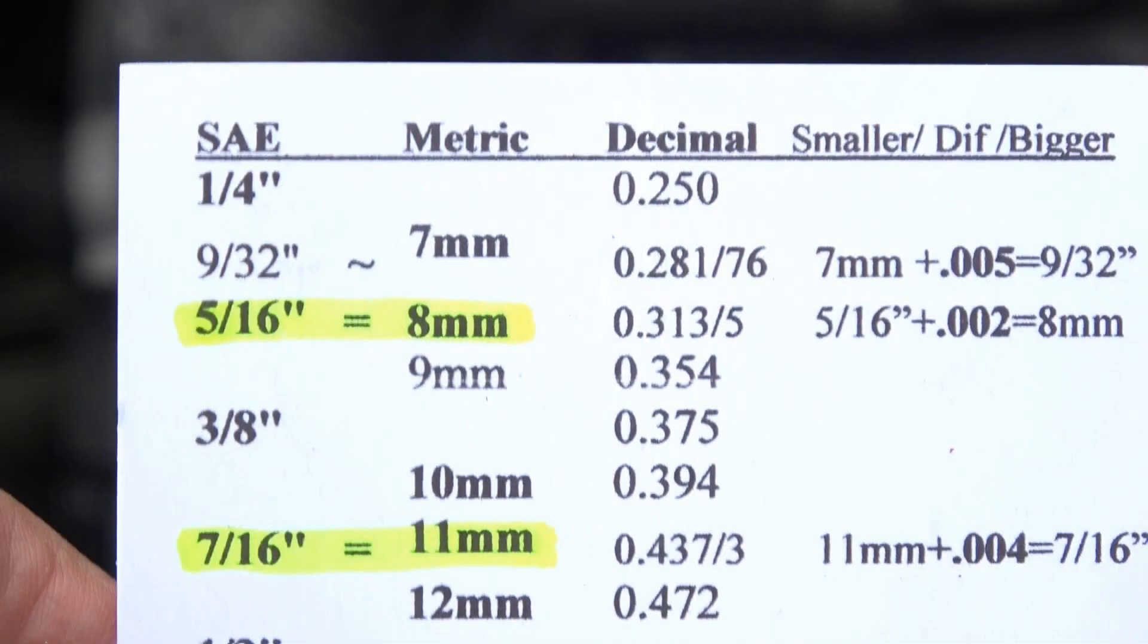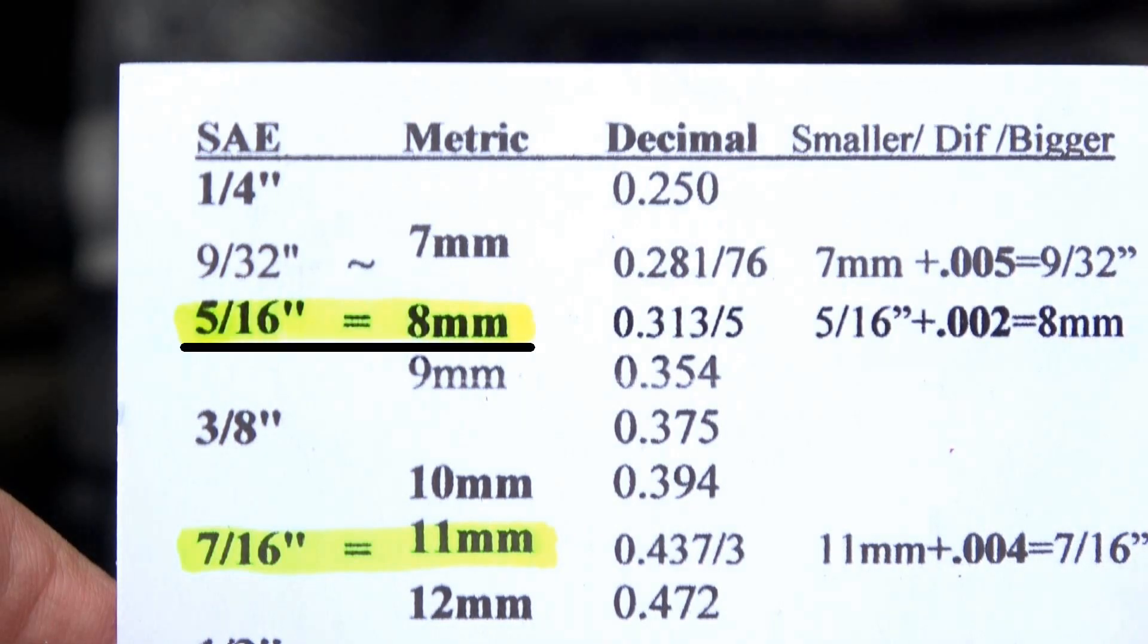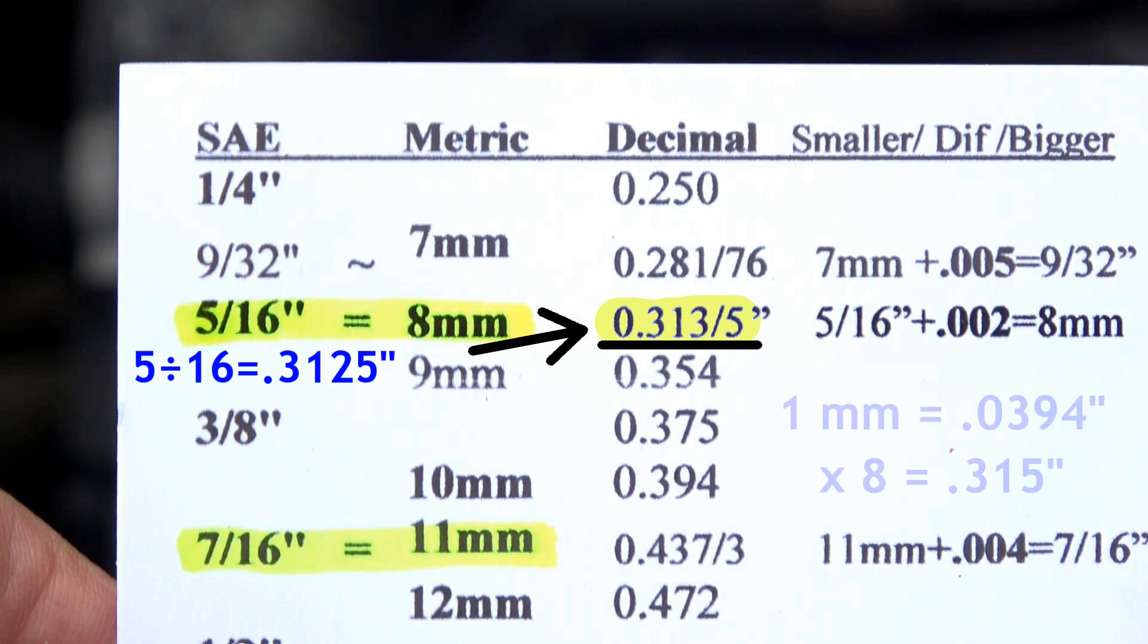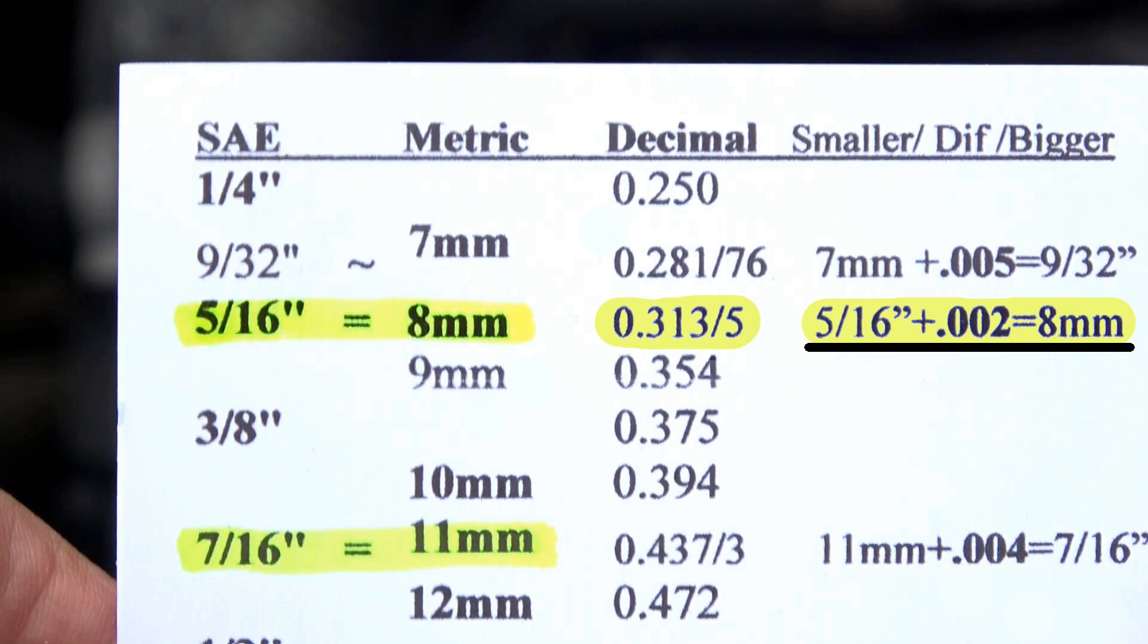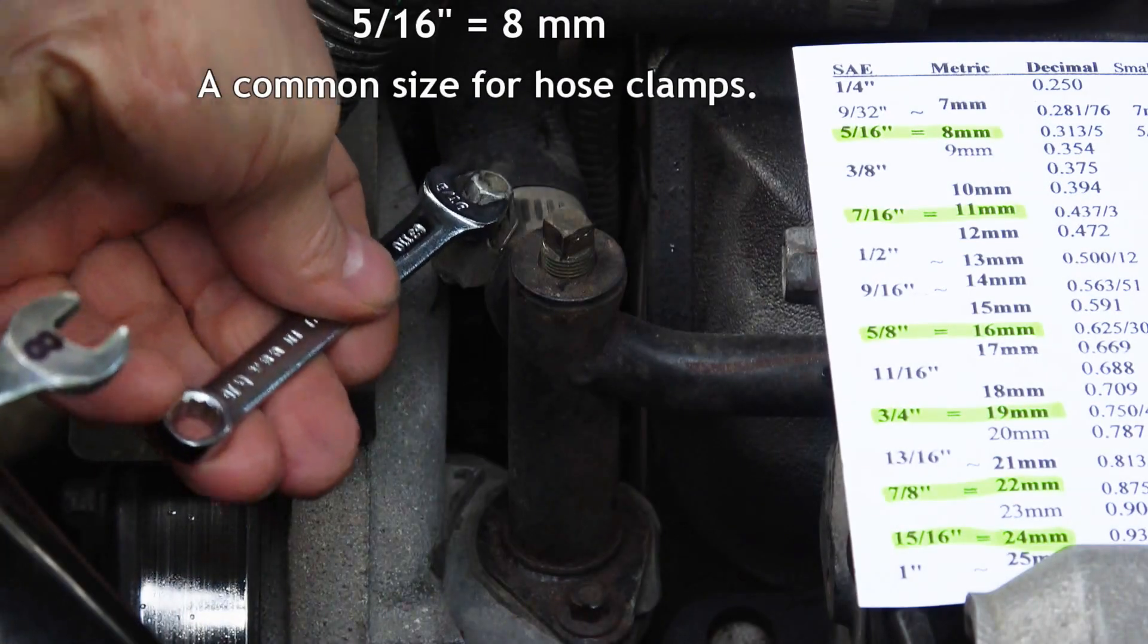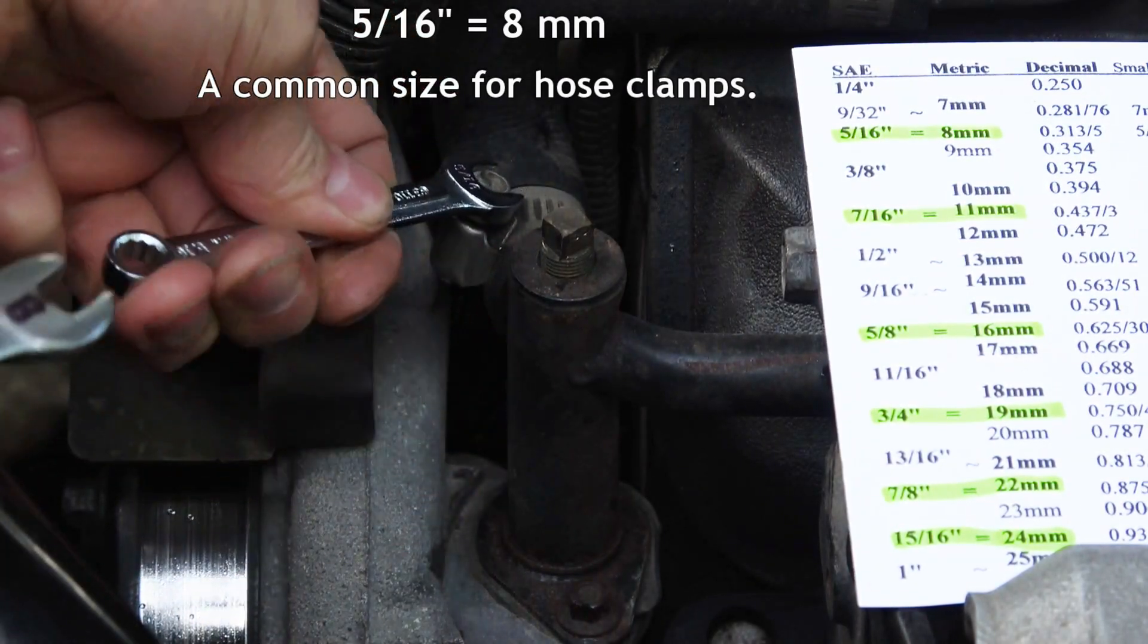You can see on this chart that 5 sixteenths of an inch and 8 millimeter wrenches and sockets are so close they are interchangeable. 5 divided by 16 rounded up is 0.313 inches. 1 millimeter is 0.03944 inches. Multiply that by 8 millimeters equals 0.315 inches. So we can see that 8 millimeters is only two thousandths of an inch bigger than 5 sixteenths, which is extremely close. This size is pretty common on hose clamps and the two wrenches or sockets fit basically the same.